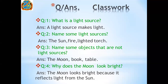These are the question answers you can see on the screen. Question 1: What is a light source? A light source makes light. Question 2: Name some light sources — the sun, fire, a lighted torch. Question 3: Name some objects that are not light sources — the moon, book, table. Question 4: Why does the moon look bright? It is not a light source; it only looks bright when sunlight is reflecting from it.